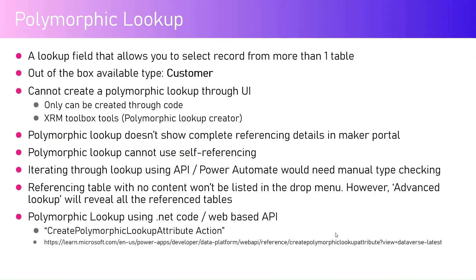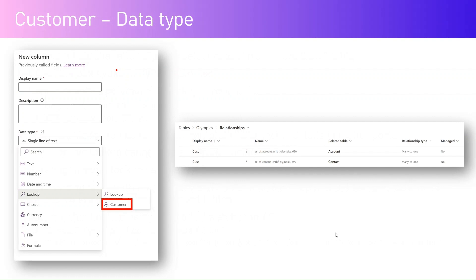Referencing tables with no content won't be listed in the dropdown menu. For example, if a polymorphic lookup refers to five tables but those tables have no records, they won't appear when you press Enter on the lookup control. Polymorphic lookup can be created using .NET code or the Web-based API. There is an action called 'Create Polymorphic Lookup Attribute' which you can use to create a polymorphic lookup.